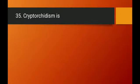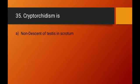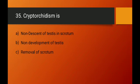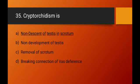Question number thirty-five: cryptorchidism refers to what condition? It is the non-descent of testes into the scrotum. Non-development of testes is wrong; removal of scrotum is wrong; cutting of vas deferens is wrong. Option A — non-descent of testes in scrotum — is the right answer.